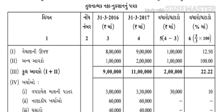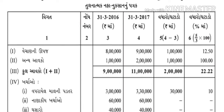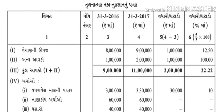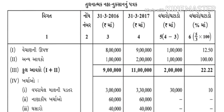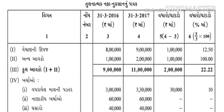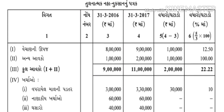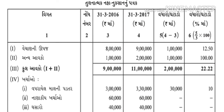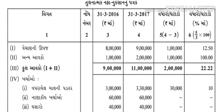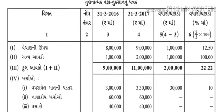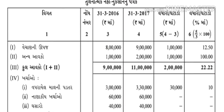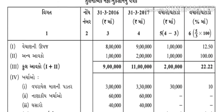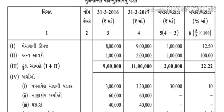ખાનું ક્યાં મળશે - ત્યાં લખી લો. ત્યાં ખાનું - હવે જે મળ્યું, ભાગ્યા ત્રીજું ખાનું - એટલે આપણને 12.50% રકમ મળશે. કેલ્ક્યુલેટરમાં તમે ગણતરી કરશો, એટલે તમને આ રીતની રકમ મળશે.